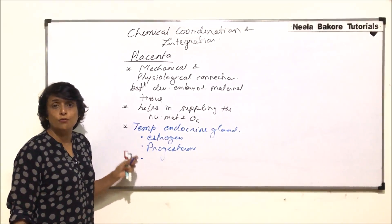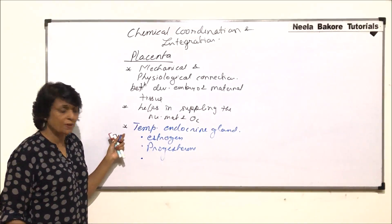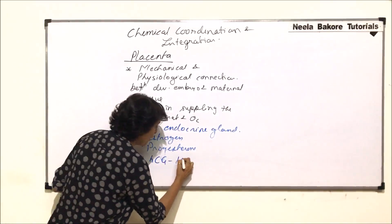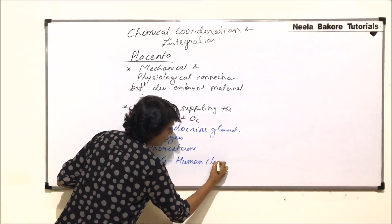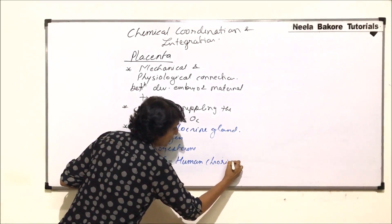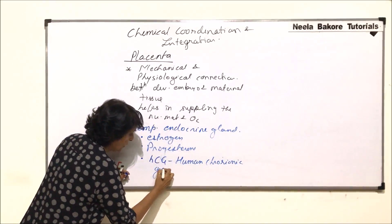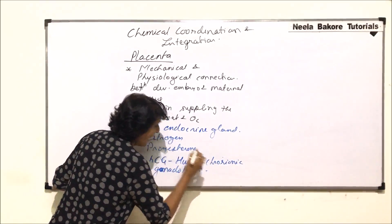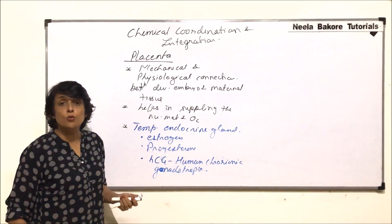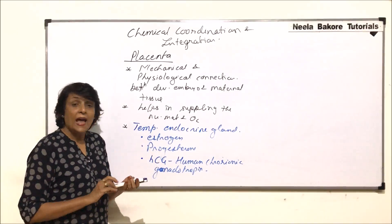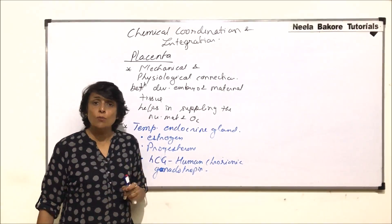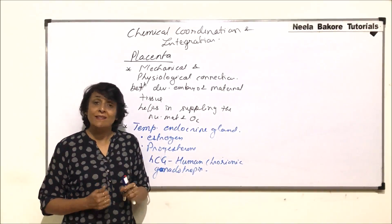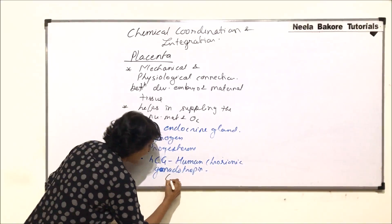The other hormone which is exclusively produced or secreted from the placenta is known as HCG — the full form is Human Chorionic Gonadotropin. This is exclusively produced by the placenta, and it is the same hormone which is detected in the urine to confirm pregnancy.